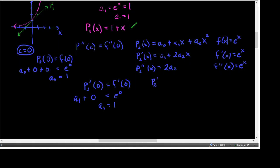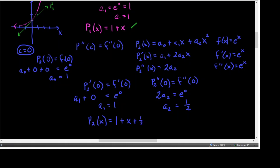Now we want the second derivatives evaluated at center 0 to equal each other, so that they have the same concavity there. The second derivative is the constant 2 A sub 2, and the second derivative of F at 0 is E to the 0, which is 1. So A sub 2 is one half. That means our second degree polynomial is A sub 0 which is 1, plus A sub 1 which is 1 times X, plus A sub 2 which is one half times X squared.